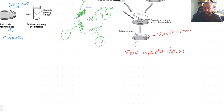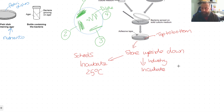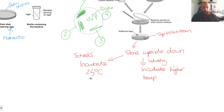In schools, the next step is to incubate — placing the dishes in an oven to encourage growth. In schools this is done at 25°C. In industry it's generally hotter, typically between 35 and 40°C, because that's the temperature at which most enzymes work best, giving much higher bacterial multiplication rates. We use lower temperatures in schools to avoid producing too many pathogens.